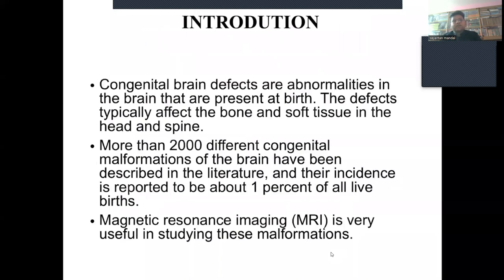Coming to the introduction, congenital brain defects are abnormalities in the brain that are present at birth. The defects typically affect the bone and soft tissue in the head and spine. More than 2,000 different congenital malformations of the brain have been described in the literature and their incidence is reported to be about 1% of all live births.